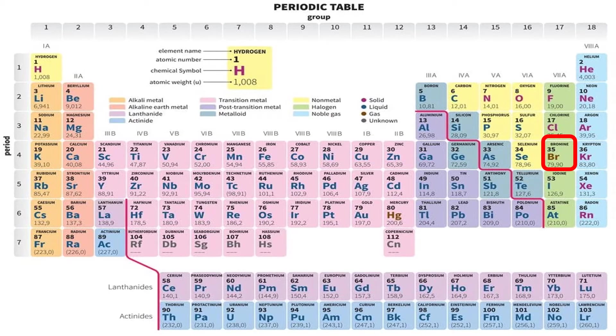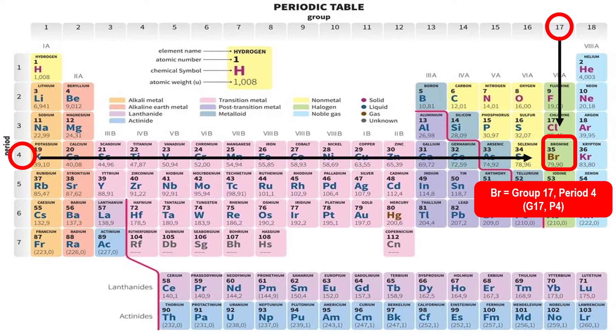Then, bromine. Bromine is located in group 17 and period 4. Bromine is found in G17 and P4.